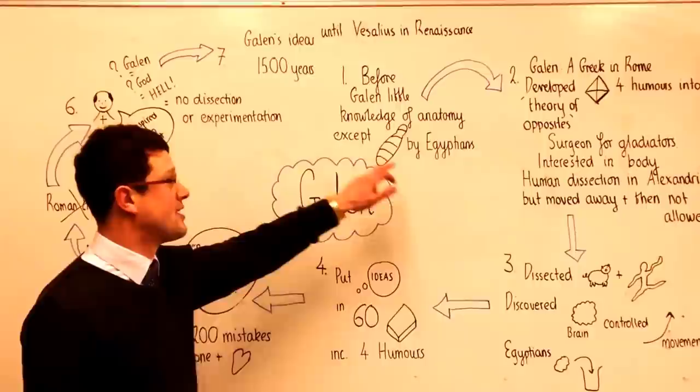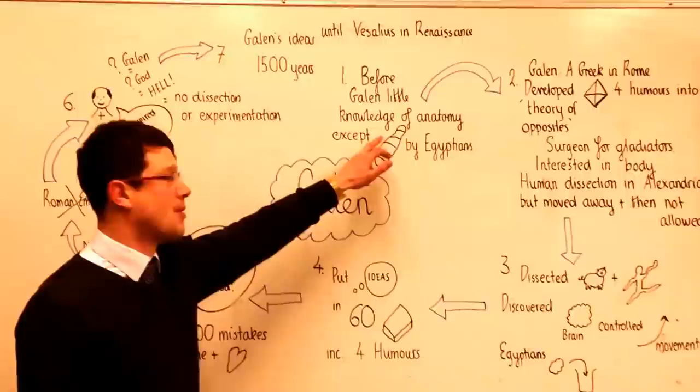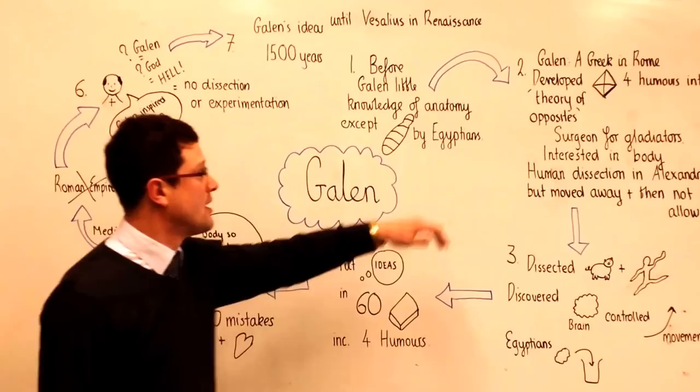Before Galen, people had very little knowledge of anatomy, except the Egyptians who had learned something about the human body through mummification. However, all they did was take the organs out, which meant they never learned how they fit together or what they did.